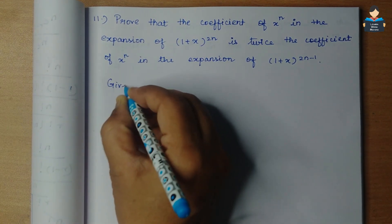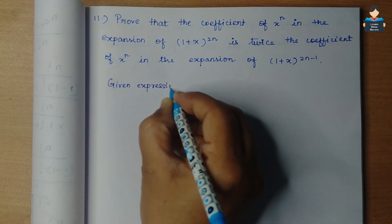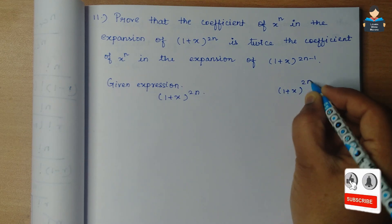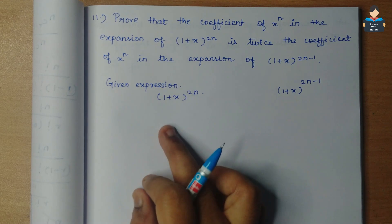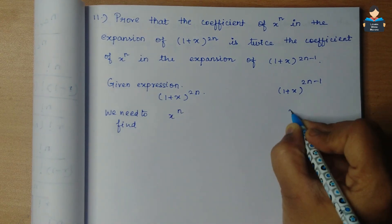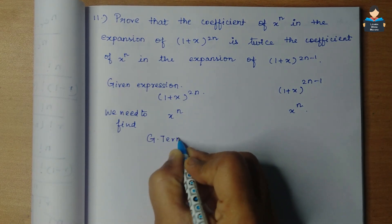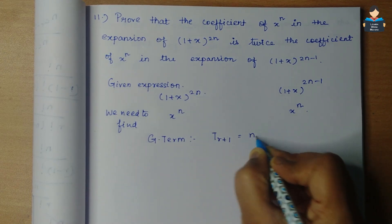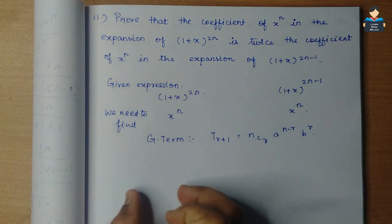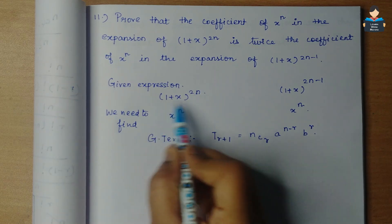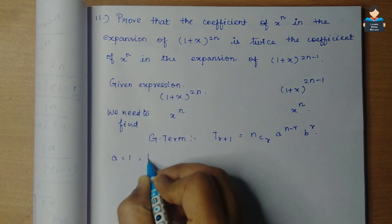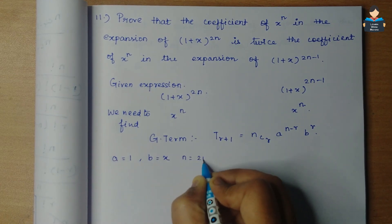So the given expressions are (1+x)^2n and (1+x)^(2n-1). We need to find the x^n coefficient. For this, we use the general term: T(r+1) = nCr * a^(n-r) * b^r. This is our general term. For the first expansion, a = 1, b = x, and n = 2n.